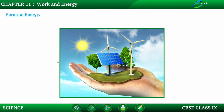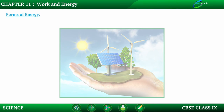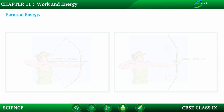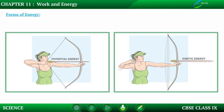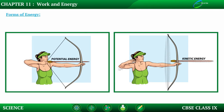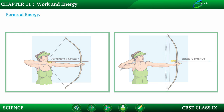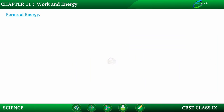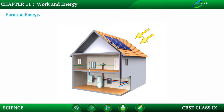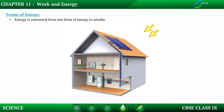A little more about forms of energy. We talked about energy, we talked about potential and kinetic energy. But we all know that energy cannot be destroyed — it can only change its form. Energy is converted from one form to another.